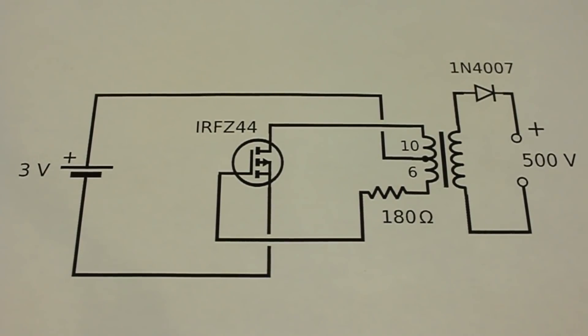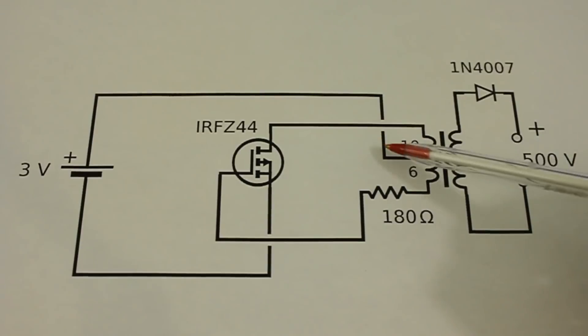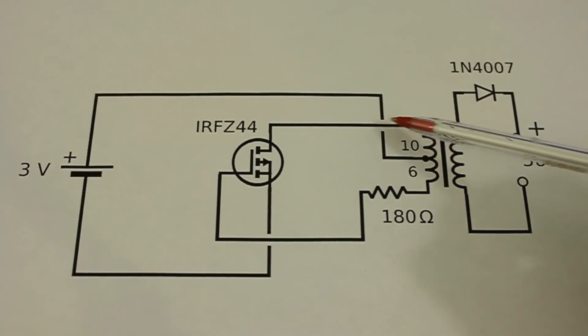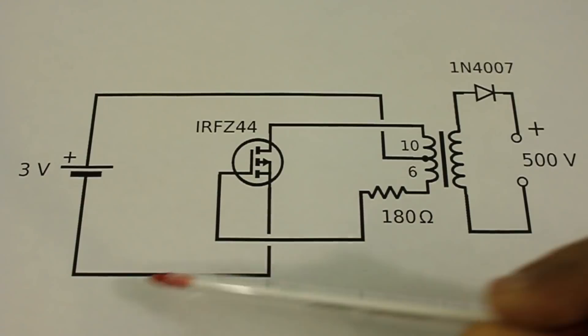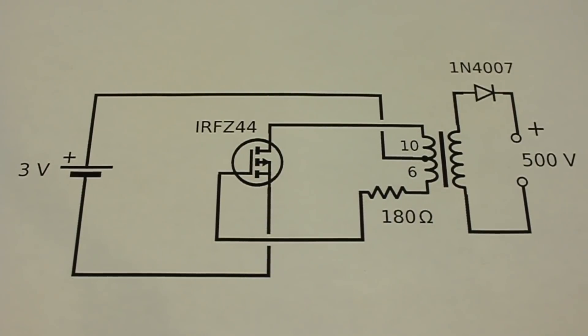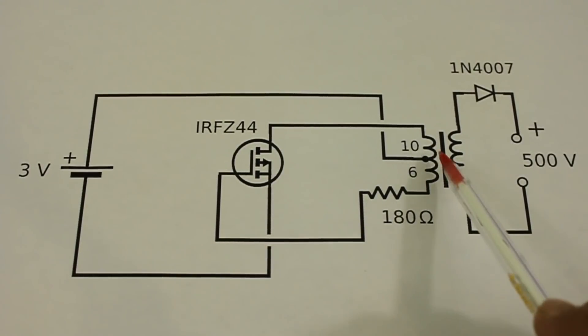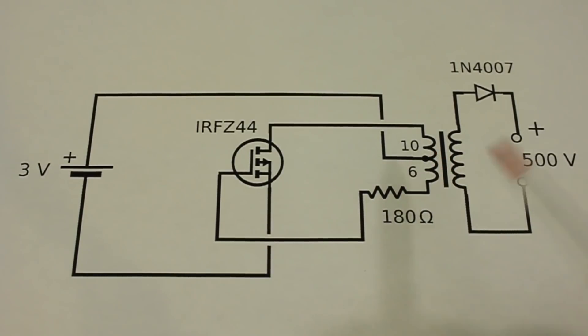The current from the power supply enters here at the center tap of the primary and through the resistor to the gate of the MOSFET. Then the MOSFET conducts and the current also flows here and then to the negative of the power supply.